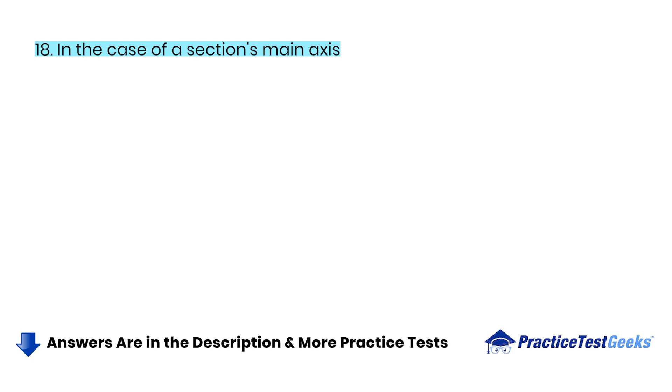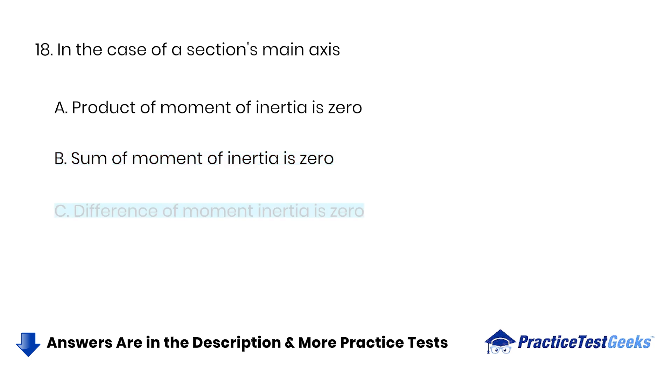In the case of a section's principal axis A. Product of moment of inertia is zero. B. Sum of moment of inertia is zero. C. Difference of moment of inertia is zero. D. None of the above.